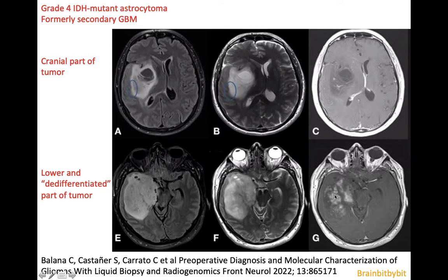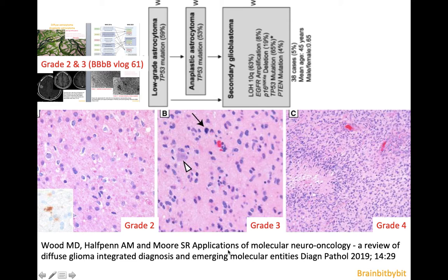Whereas in the caudal part of the tumor there is irregular enhancement — this is the de-differentiated grade 4 part. Astrocytomas grade 2 to 4 are part of a continuum: increased cellularity in grade 2, positive for IDH mutation, nuclear atypia and increased mitosis in grade 3, and in grade 4 you can see necrosis and endothelial proliferation. This endothelial proliferation and angiogenesis is what will tell us the difference between grade 4 astrocytoma and glioblastoma.